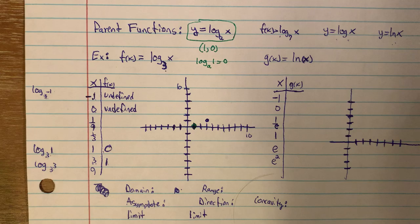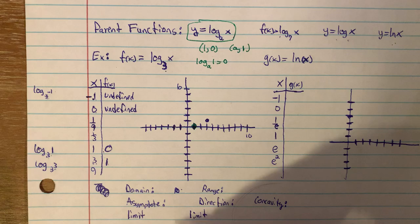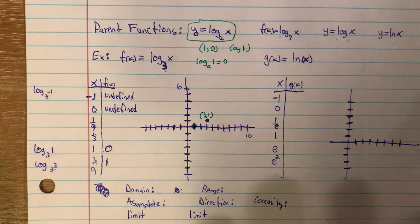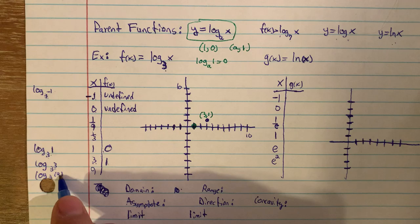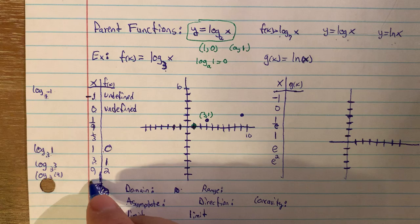When x is 3, log base 3 of 3 — 3 to what power gives you 3? The answer is 1. So when x is 3, y is 1. This is another important point: whenever x equals whatever the base is, the y value will be 1, because log base a of a equals 1. So for a base of 3, we have a point at (3, 1).